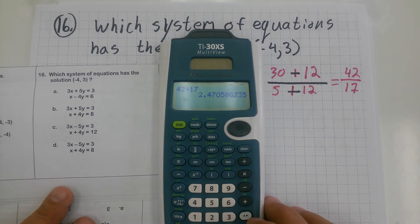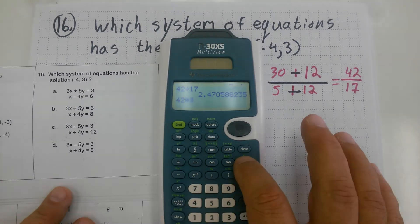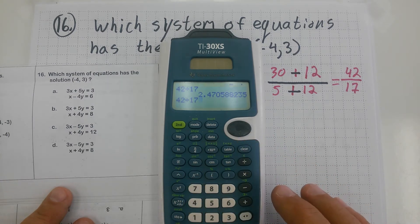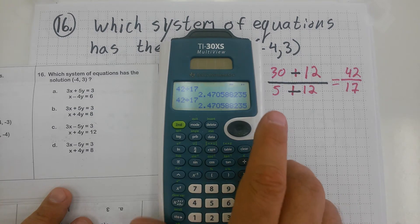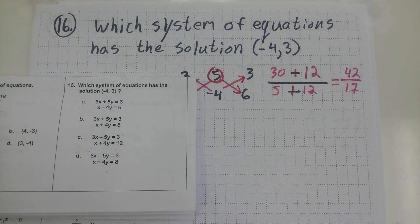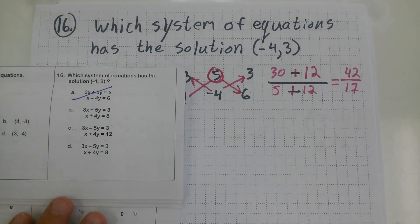That's not 4. 42 divided by 17. No, not even a whole number. So it can't be choice A. It cannot be choice A. I can get rid of that. So now I'm going to try for choice B.